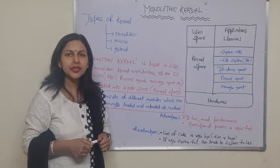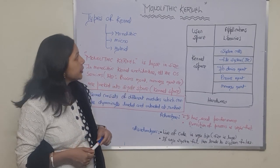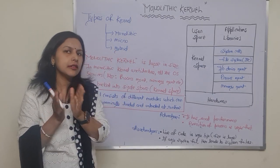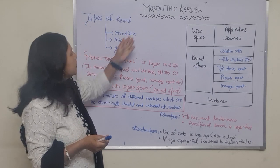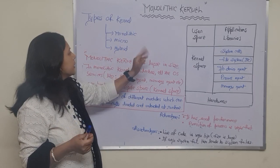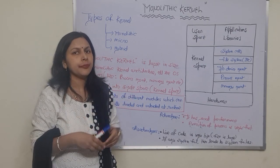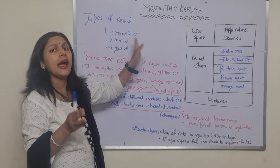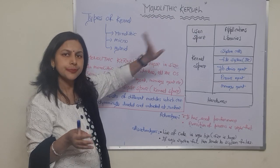Welcome back to the channel — Techno World. In today's topic I'm going to discuss the different types of kernel. In the previous video I discussed the kernel and shell. We have different types of kernel: monolithic kernel, micro kernel, hybrid kernel, exo kernel, and nano kernel. The most recently used ones are monolithic and micro kernel, and today I'm going to discuss the monolithic kernel.